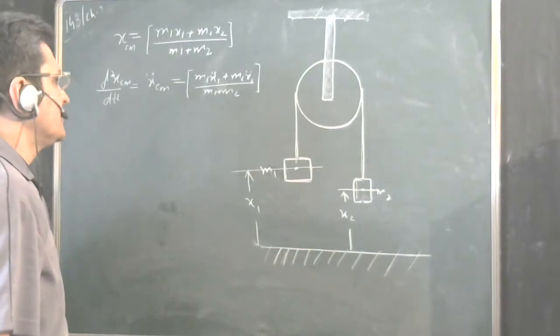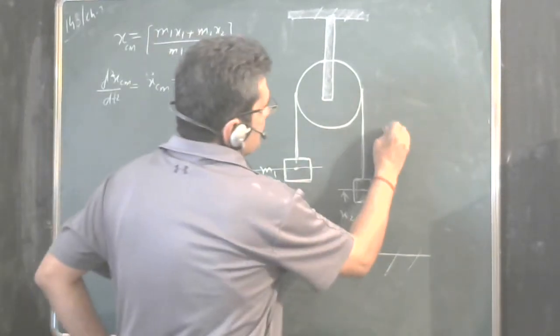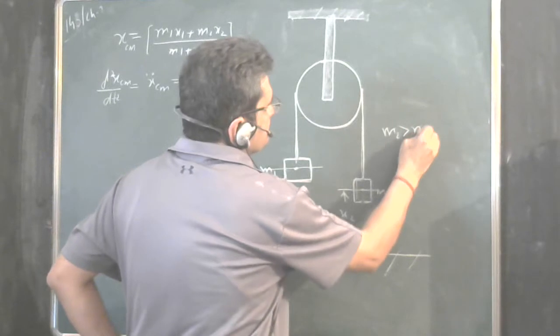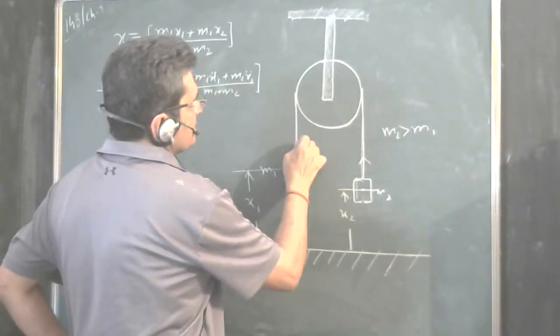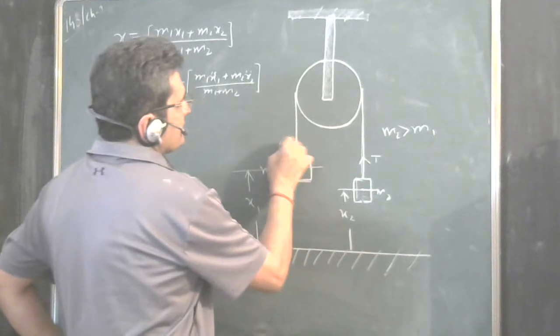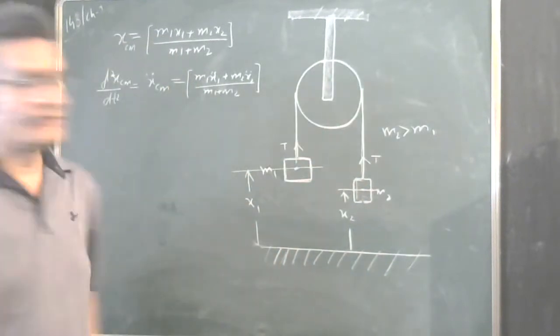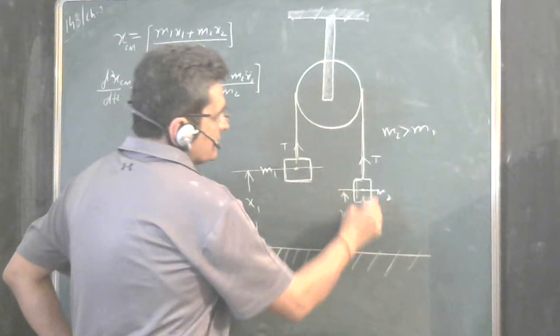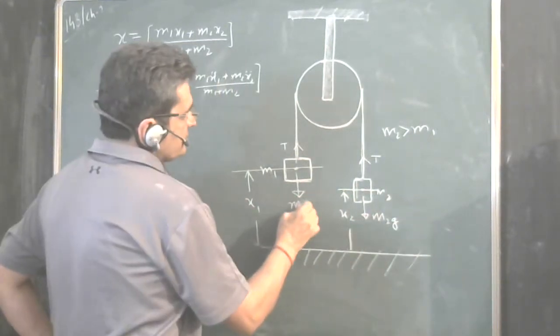Now, what is the value of x1 double dot and x2 double dot? Let us consider M2 to be greater than M1. And, let us find how they will move. Mass of string is ignored, so tension will remain same in the string on both the sides. This weight will be M2g and this weight will be M1g.